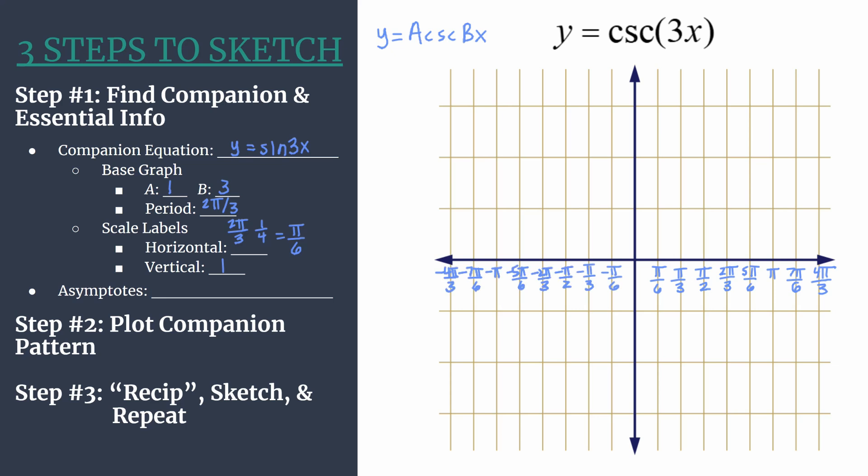Here's what the full horizontal labeled axis looks like. We can quickly label the vertical axis too since we're just counting by ones. So 1, 2, 3 and negative 1, negative 2, negative 3.